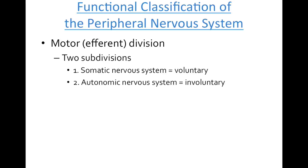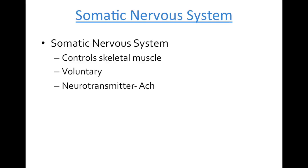The motor or efferent division is broken into two subdivisions: the somatic nervous system which controls our voluntary response, and the autonomic nervous system which controls our involuntary response. Within our somatic nervous system, the voluntary response through the efferent pathway controls our skeletal muscle. At the neuromuscular junction, a neurotransmitter is required to move the stimulus across the synaptic cleft — this neurotransmitter is ACh or acetylcholine. The new term for our pathway to skeletal muscle is called our somatic nervous system.